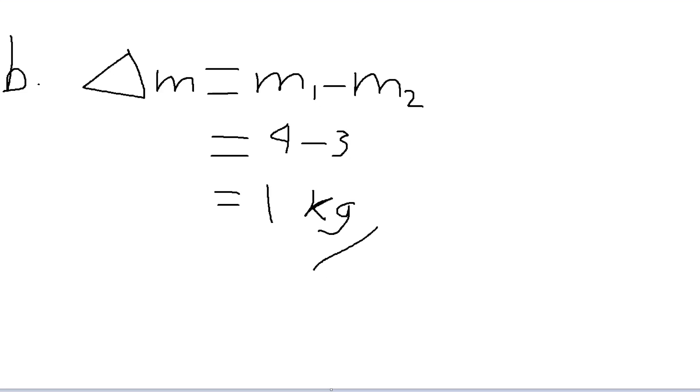We just gonna do Delta M equals to M1 minus M2 which is 4 minus 3 which means 1 kilogram. That's it, like and subscribe.